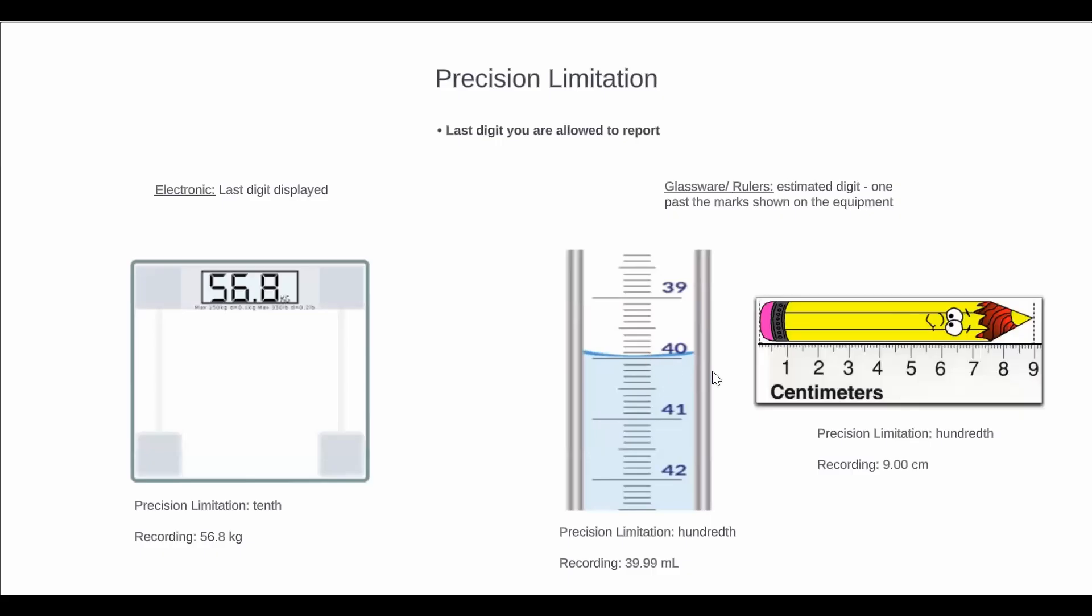And we have to go one past that, which is why our precision limitation here is the hundredths. And we can see that the value is between 39.9 and 40, leading more towards the 40 side. So I would record this as 39.99 or 39.98 milliliters, since it's not exactly on 40.